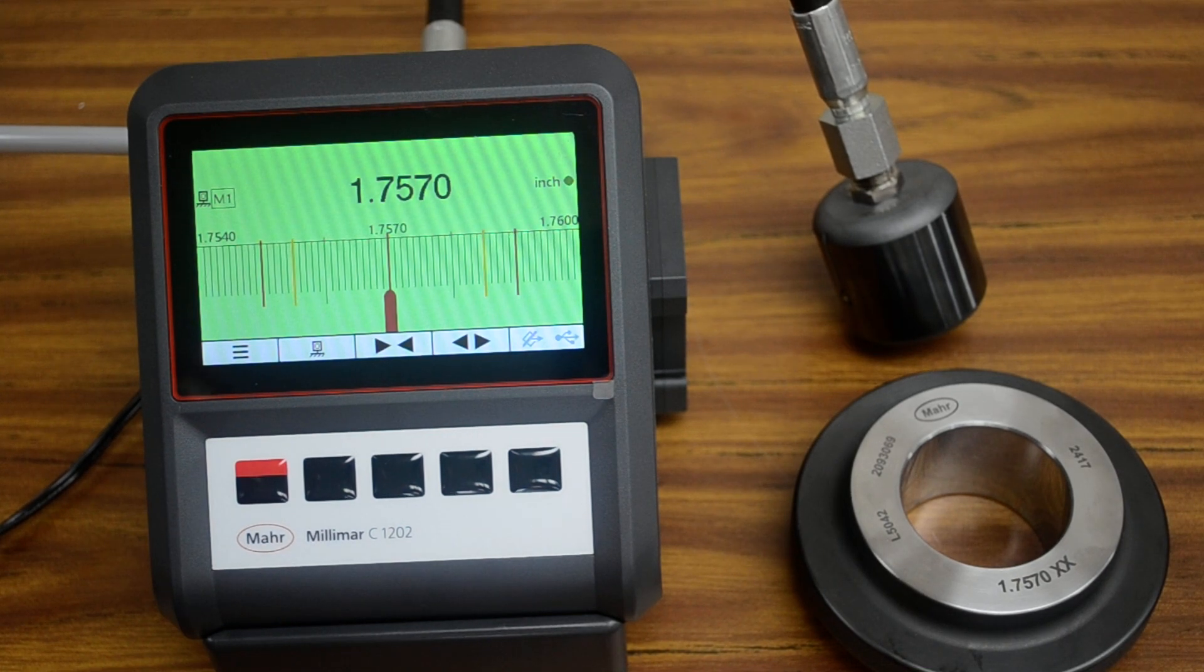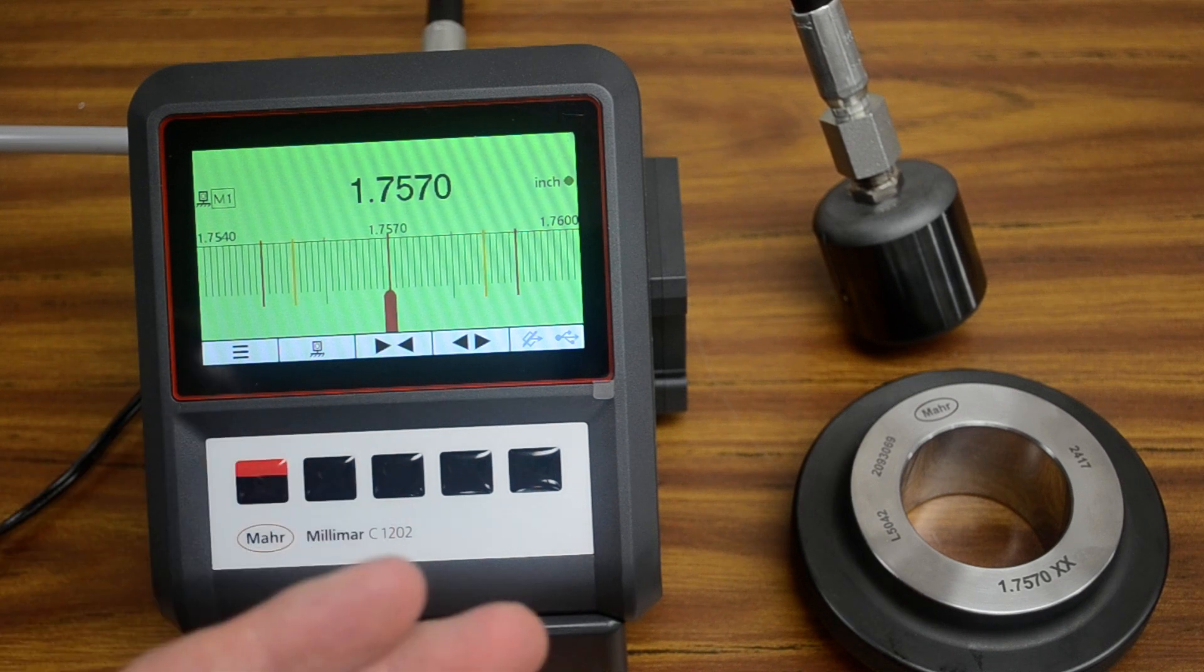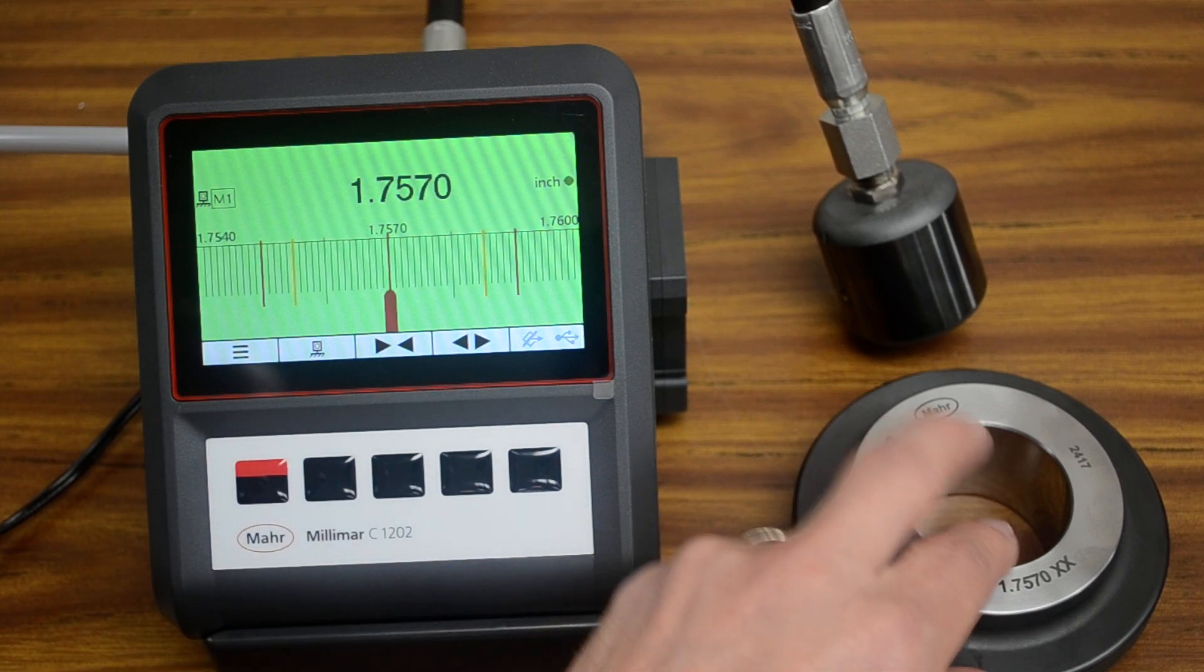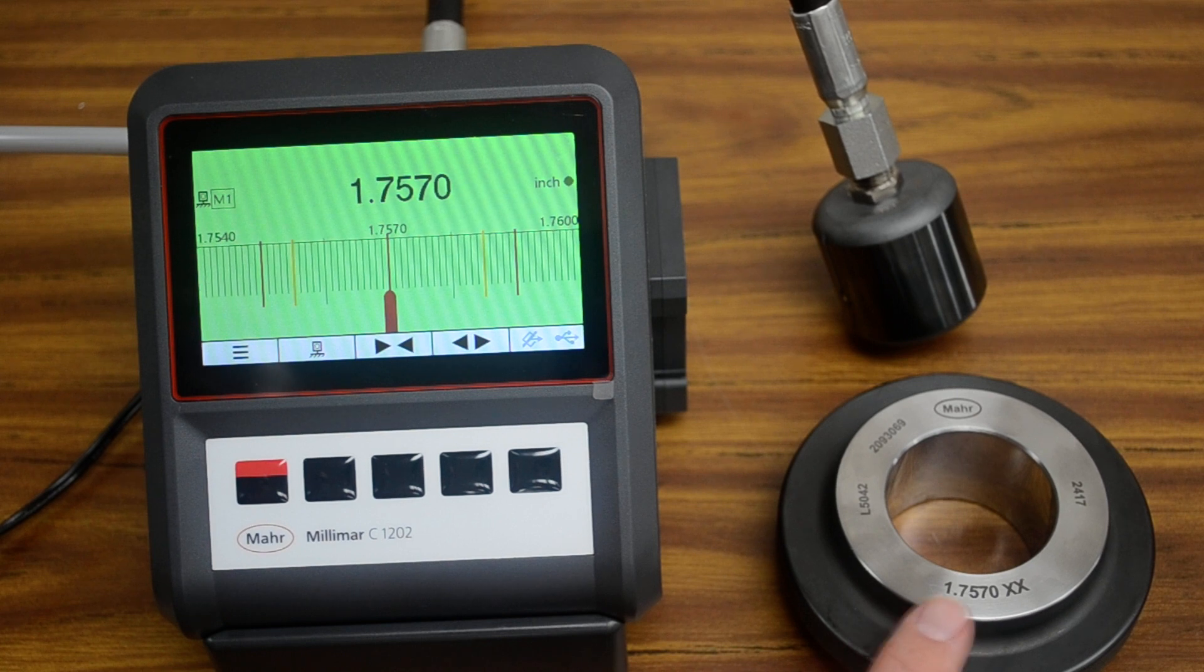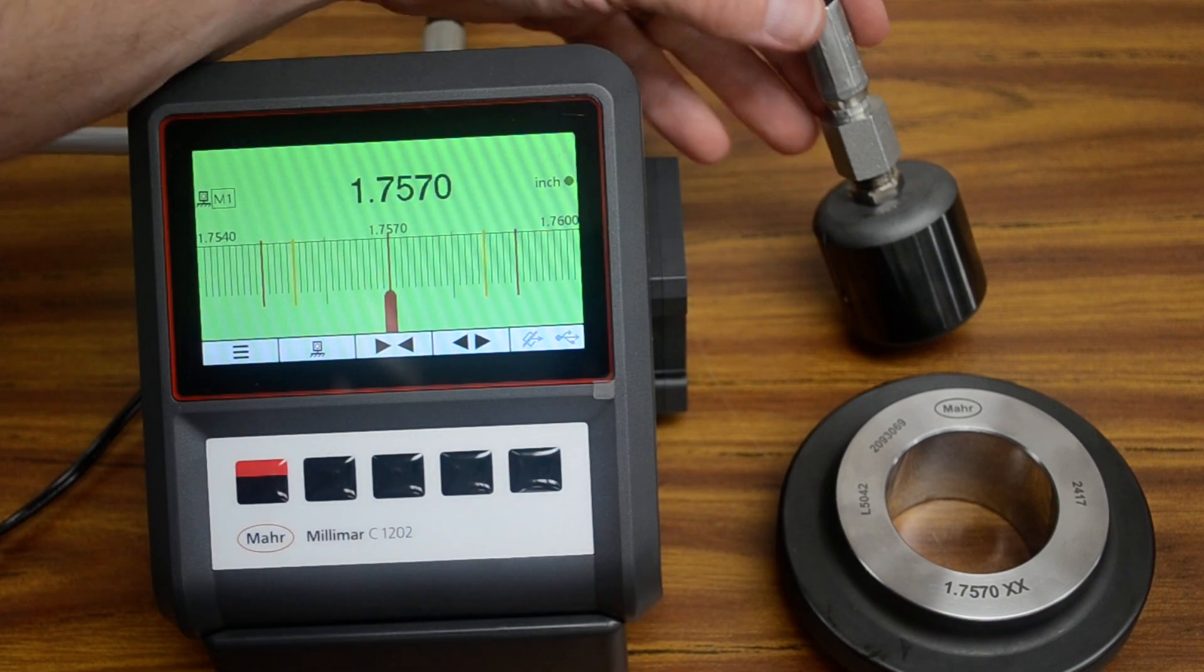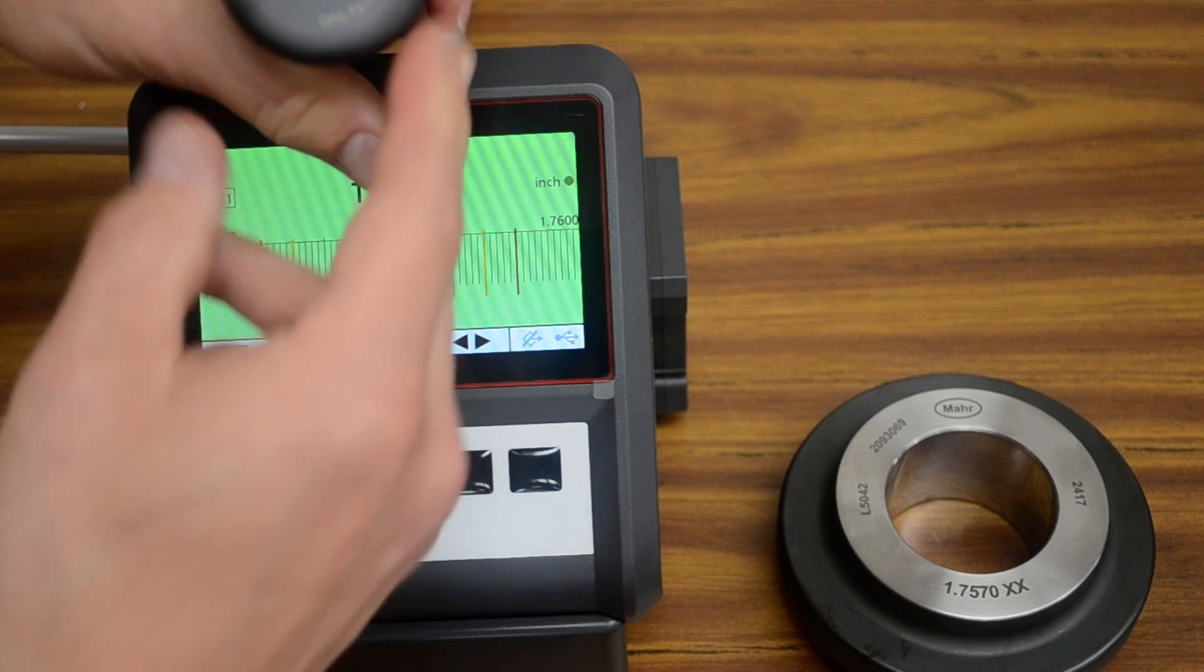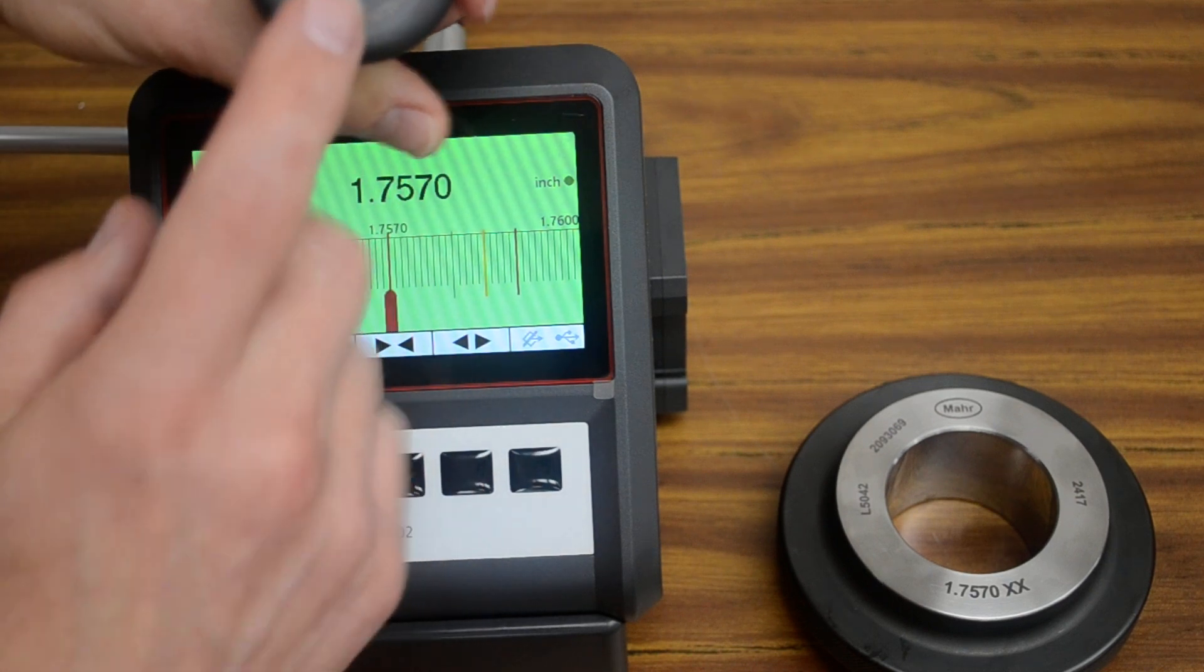In this video, we'll show how to set up the amplifier with all the settings for a certain size air plug. In this case, this is going to be a 1-inch 757 master and a 1-inch 757 air plug.